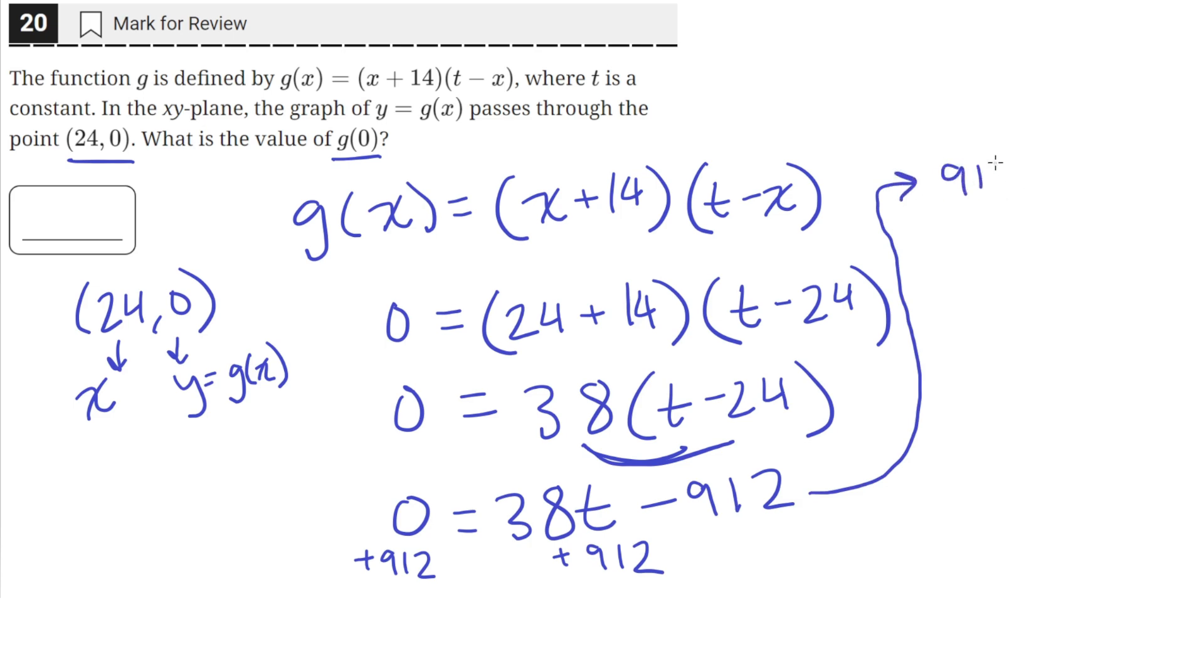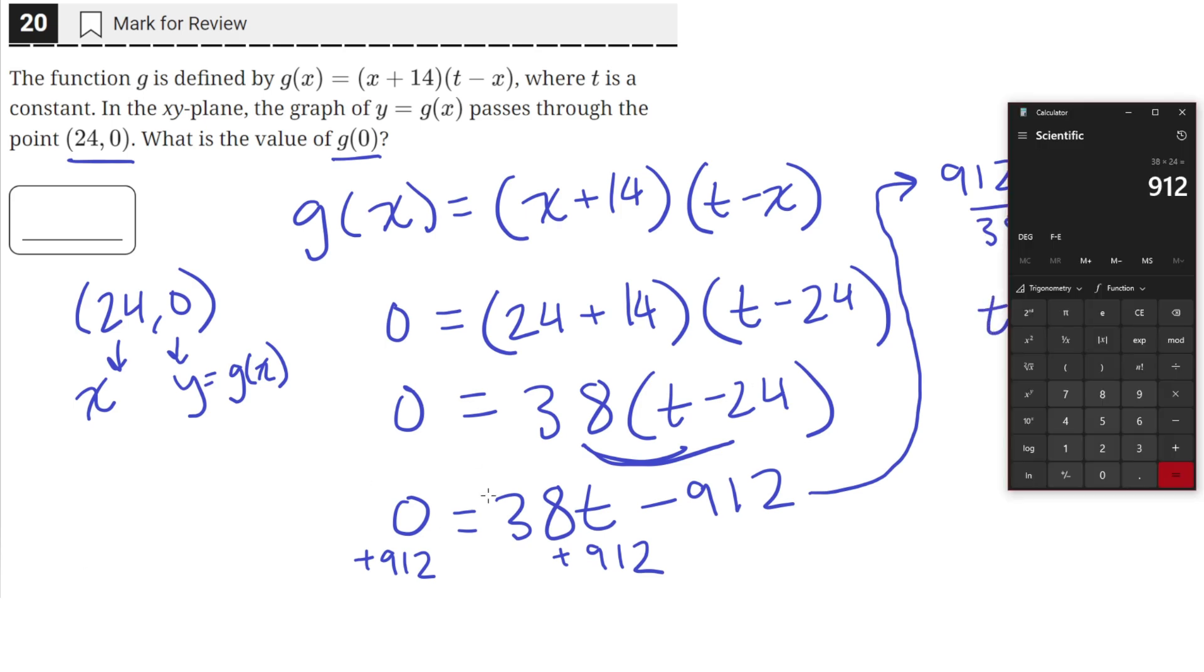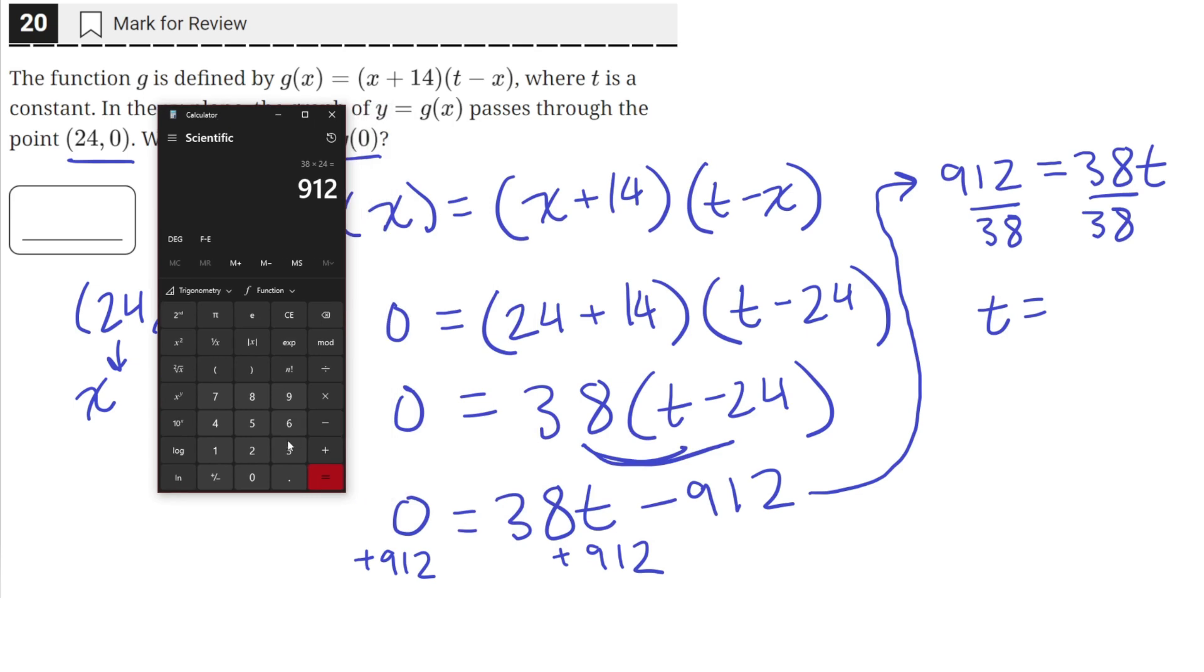So 912 on the left, and then on the right we'll have 38t. We can divide both sides by 38, and we'll get t equals 912 divided by 38, which equals 24.